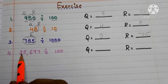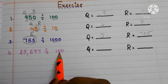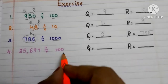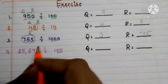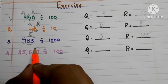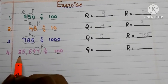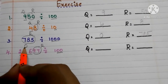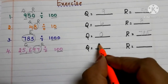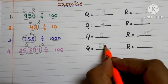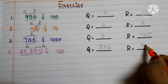Here we have the number 25,697 divided by 100. In 100, two zeros are there. So the last two digits become the remainder and the remaining digits become the quotient. The quotient is 256 and the remainder is 97.